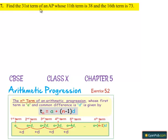Moving on to the 7th question: find the 31st term of the AP whose 11th term is 38 and 16th term is 73.